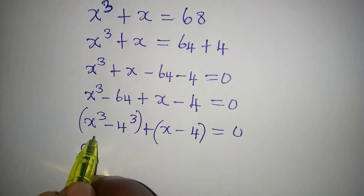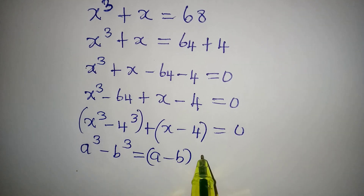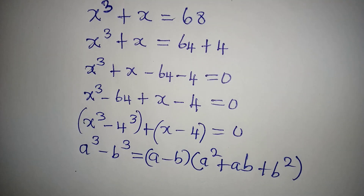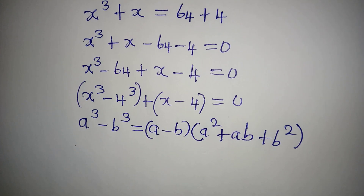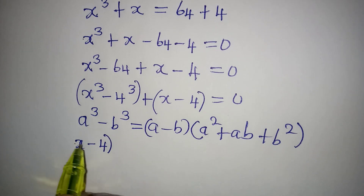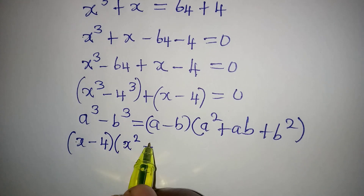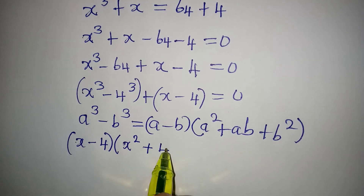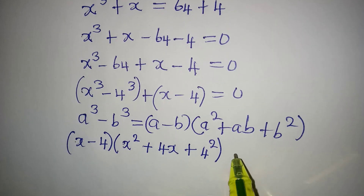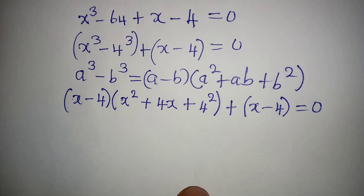I can group like this and then factorize. Do you know that a to the power of 3 minus b to the power of 3 is equal to a minus b, times bracket a squared plus ab plus b squared? Now if this is the case, then in this bracket I'm going to have x minus 4. Then here we're going to have x squared plus ab, that will be 4 times x, giving 4x, then plus b squared which will be 4 squared.